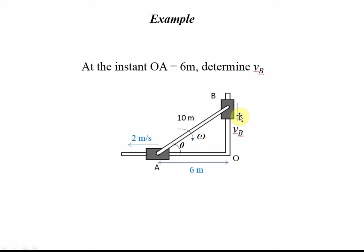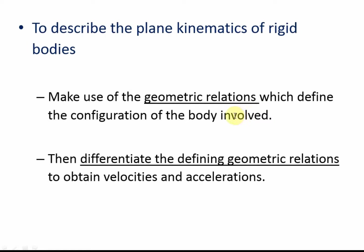The idea is to describe the kinematics of a rigid body, especially for multiple rigid bodies connected to each other. First, we make sure of the geometric relationship which defines the configuration of the bodies involved. Then we differentiate the defining geometric relations to obtain velocity and acceleration. Once you define the geometric relations involving position and differentiate, you get the velocity and acceleration of each part.